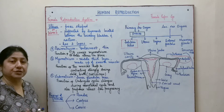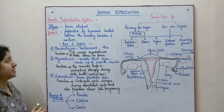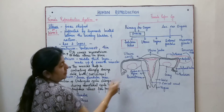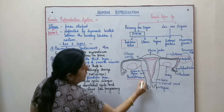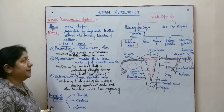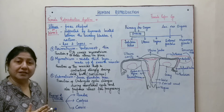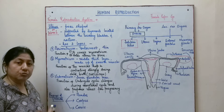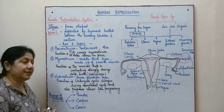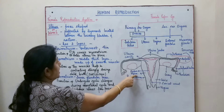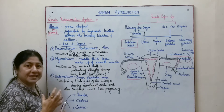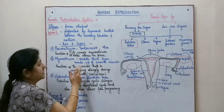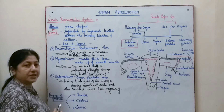The uterus has three distinct layers. The perimetrium is the outermost layer, and as you can see here, it is comparatively thinner than the other layers. Since it is on the outside, it protects the inner layers and also helps in keeping the uterus intact and held in place.